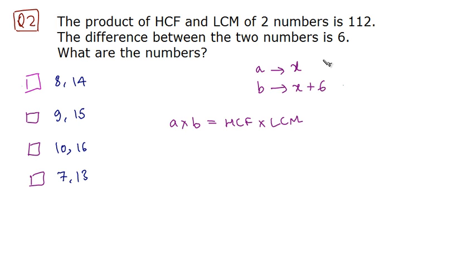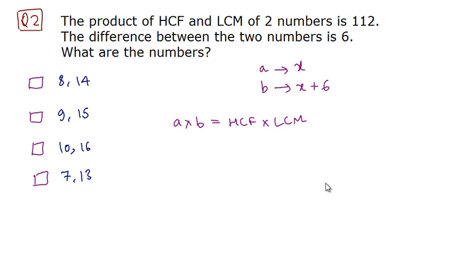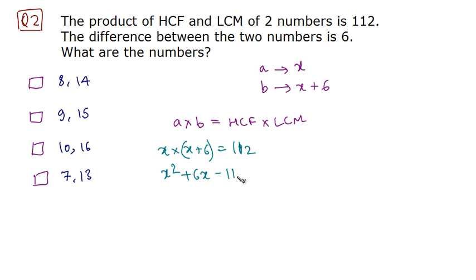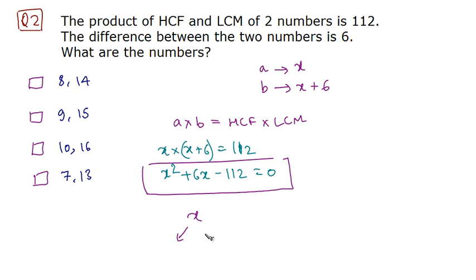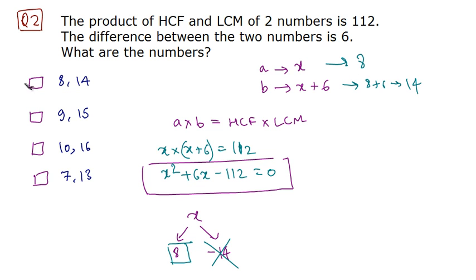We know that the product of two numbers is equal to the product of their LCM and HCF. Putting the values of A, B, HCF, and LCM, we get X into (X plus 6) equals 112. So we have X squared plus 6X minus 112 equals 0. Solving this quadratic equation gives two roots: 8 and minus 14. Since there are no negative numbers here, we ignore minus 14. So X is 8, meaning A is 8 and B is 8 plus 6, that is 14. Our answer is option A: 8 and 14.